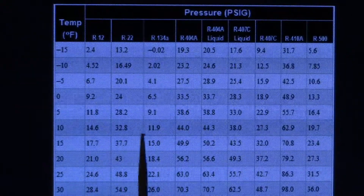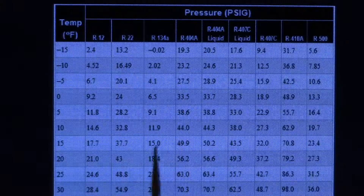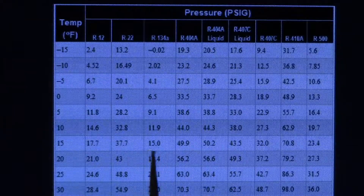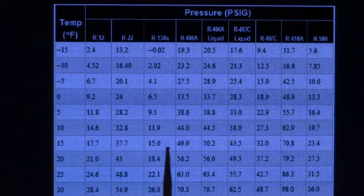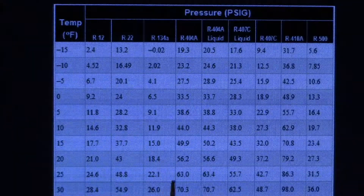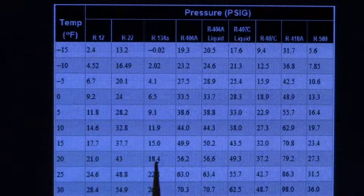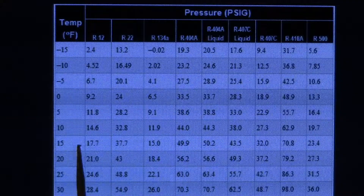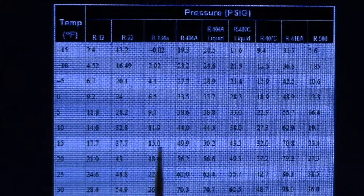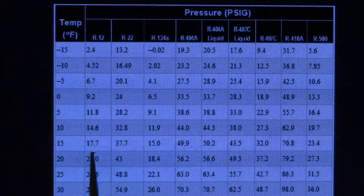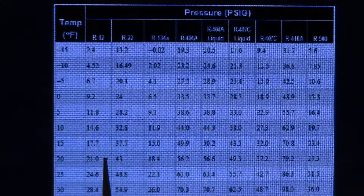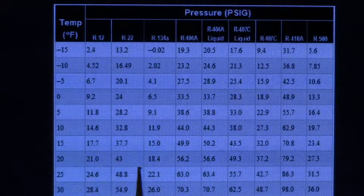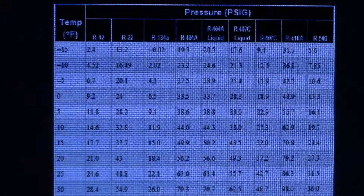Now let's look at R134A for a second. Let's say you had a reading on your gauges of 17 psi. We have a 15 and we have 18 — there's no 17 there. Here's what I've always done: you go over here and you see where 15 psi equals 15 degrees, and 18 psi equals 20 degrees. If you're at 17, what temperature are you going to use? Split it down the middle — 16 or 17 degrees. Run with that, because as long as it's split in an equal way.